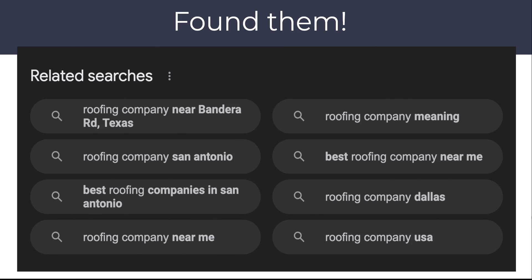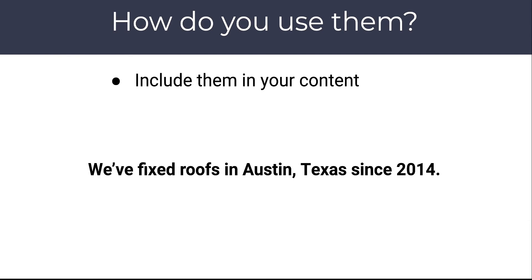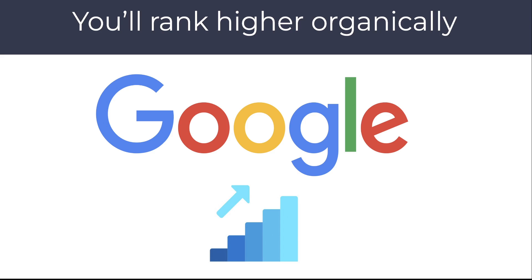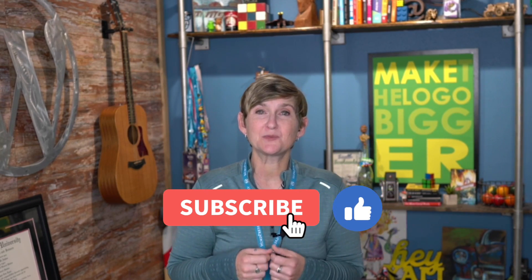Now that you've found your keywords, how do you actually use them? Include them in your content and add them to your headlines — for example, 'We've fixed roofs in Austin, Texas since 2014,' or 'Customers say we're the best roofing company in Texas.' The more you include higher-volume search terms in your website content, the higher you'll rank organically. Be sure to check out my full playlist dedicated to SEO, subscribe to my channel, and come back next week as we talk about on-site SEO. See you then!